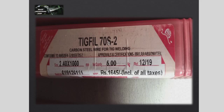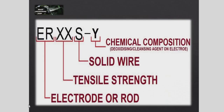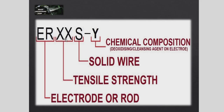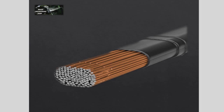The example is ER70S-2 filler wire. ER70S-2 is a carbon steel wire for TIG welding. 'ER' means electrode and rod — solid bar. The first two digits, '70', is tensile strength — the mechanical property. Same as before: if you have 70, 80, or 90 KSI base material, you choose the matching filler wire. 'S' — the third character — means solid wire.